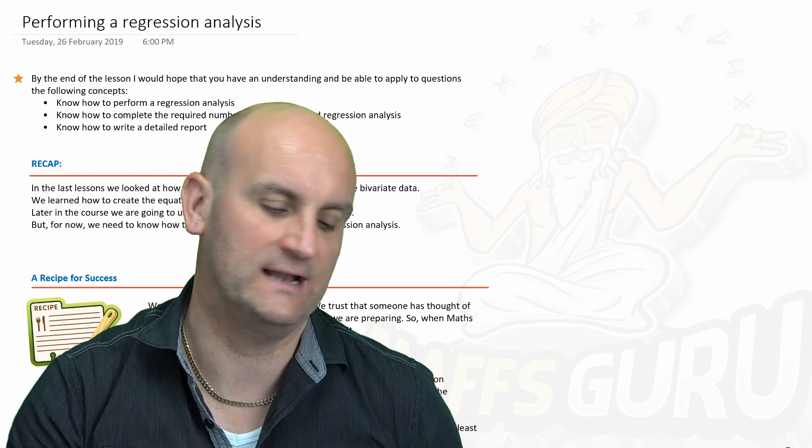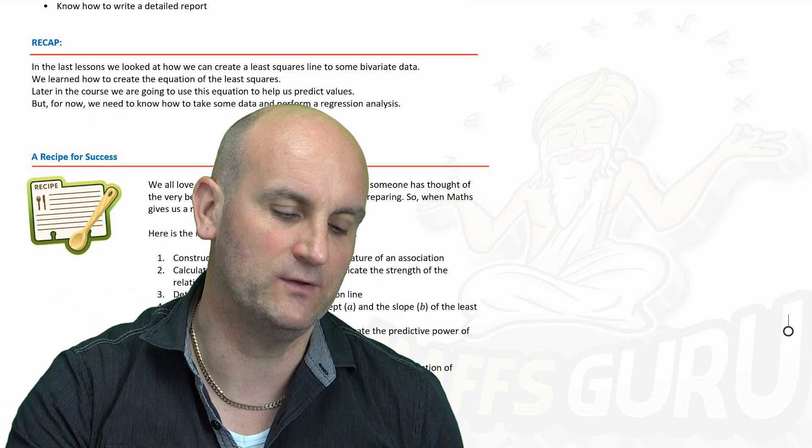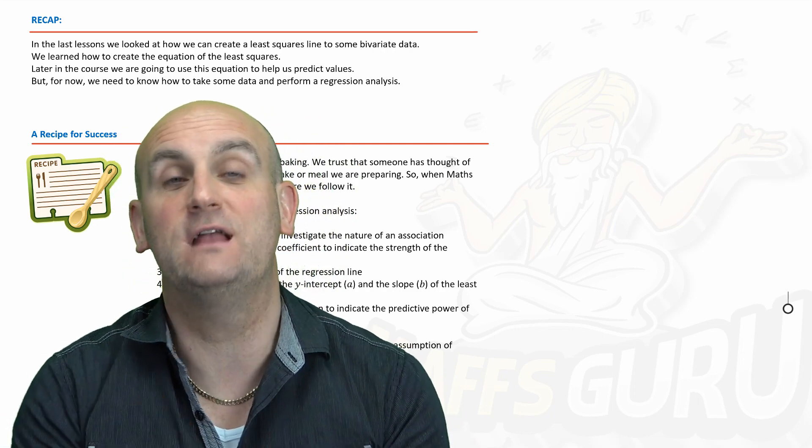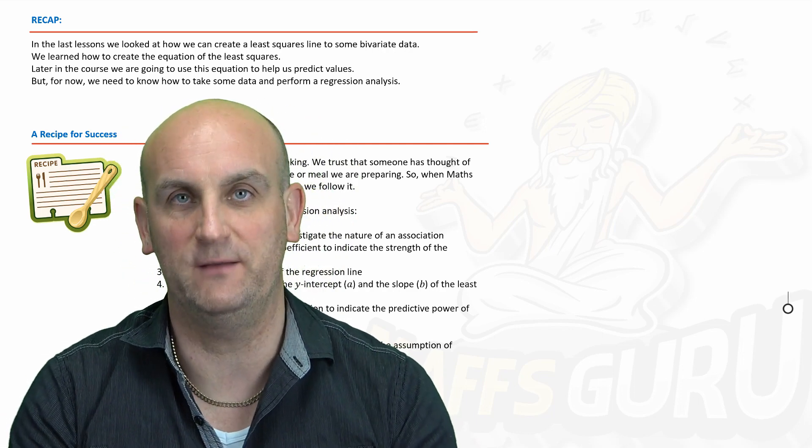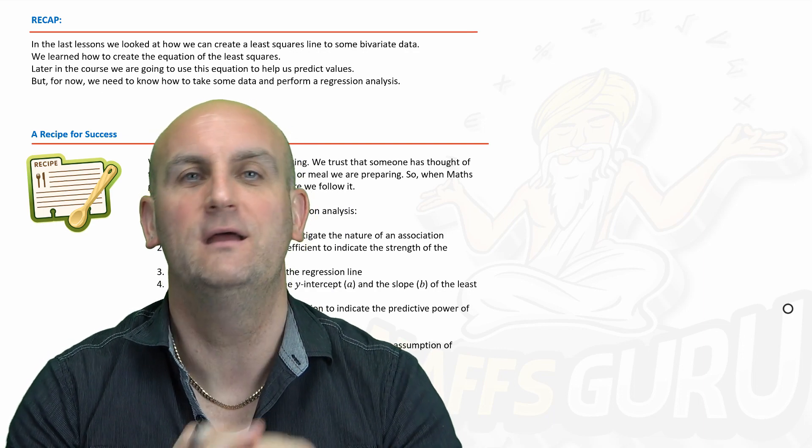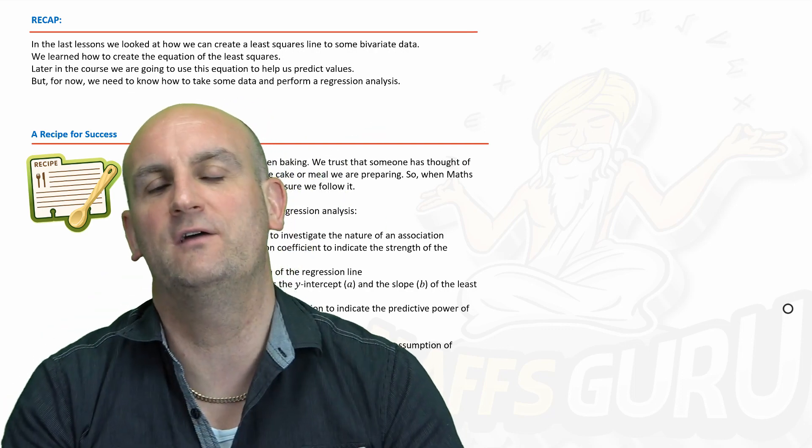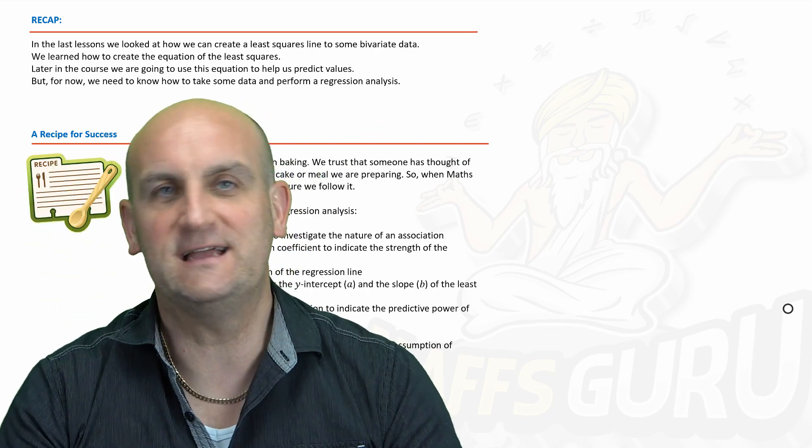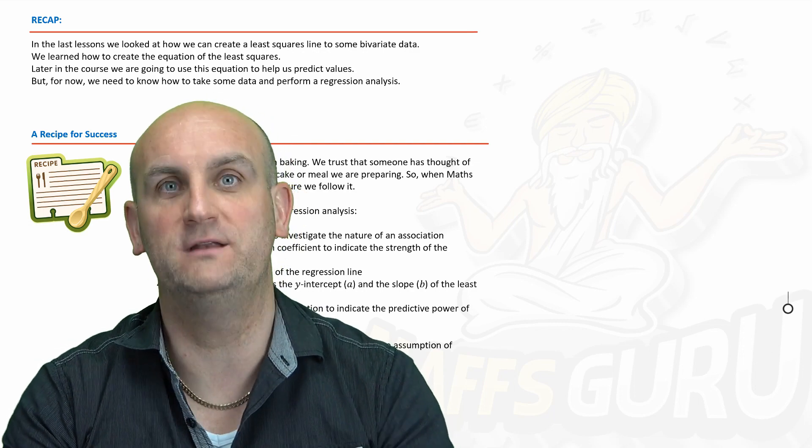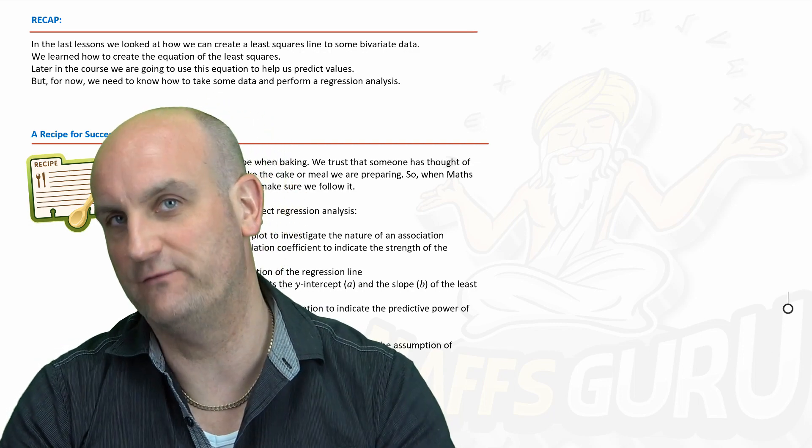Okay so performing a regression analysis, as I say I always normally start with a bit of a recap. We've looked at least squares lines and what they are. Now I think of those as basically lines of best fit. We're gonna take data from a scatter graph or a scatter plot and we're gonna try and find some sort of line of best fit that'll either be positive or negative and we'll be able to use that to predict. The whole point of this is to be able to predict values.